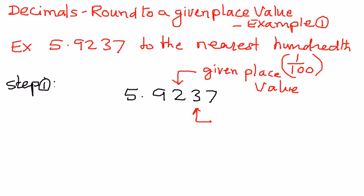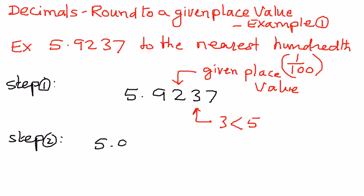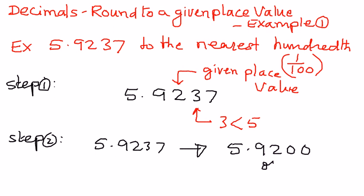In this case, 3 is less than 5. Since 3 is less than 5, we drop 3 and 7 and make them equal to 0. So in step 2, we write the number as follows: 5.9237 can be rounded to 5.9200, or we can simply write this as 5.92. This is how we round a decimal number to a given place value.